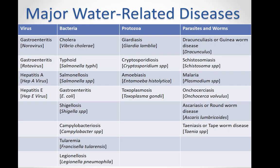This table provides a reference for the various kinds of water-related diseases organized by pathogen type. Virus-caused diseases listed include gastroenteritis caused by norovirus, gastroenteritis caused by rotavirus, hepatitis A caused by hep A virus, and hepatitis E. Bacteria-caused water-related diseases include cholera, typhoid, salmonellosis, gastroenteritis, shigellosis, campylobacteriosis, tularemia, and legionellosis, with the specific bacteria noted in parentheses.